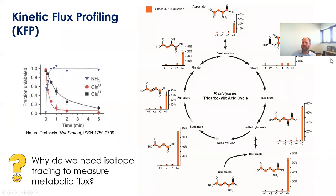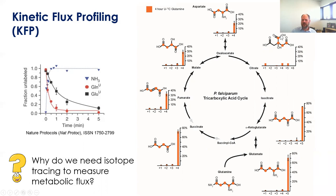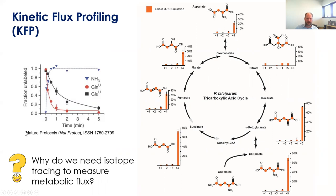In kinetics flux profiling, or KFP, the idea is that you introduce an isotope — like C13 uniformly labeled glutamine — at some time T0, and then you measure the rate of appearance of it into downstream pathways over time. You'll find kinetics showing the disappearance of the unlabeled form and a reciprocal appearance of the labeled form. The nice thing is it's very direct and empirical. Its limitation is that it requires an isotope-labeled precursor, which restricts the total number of pathways that can be interrogated.